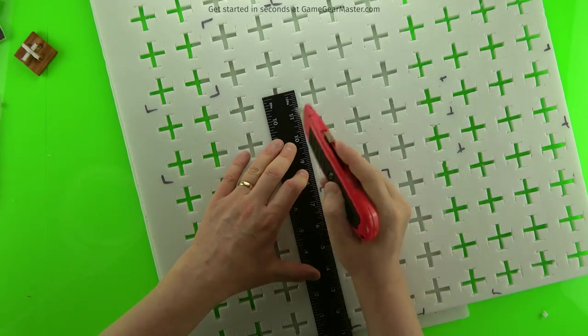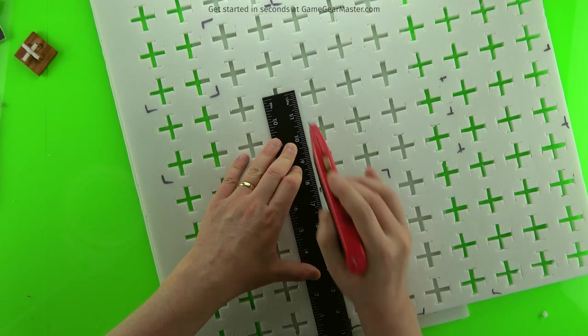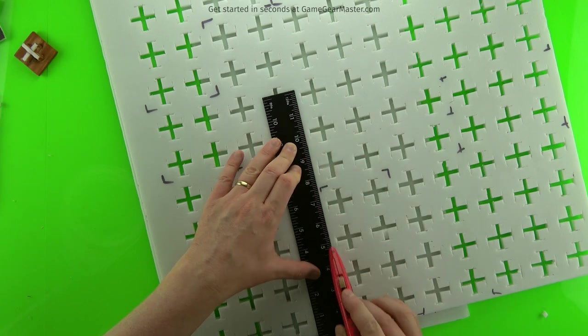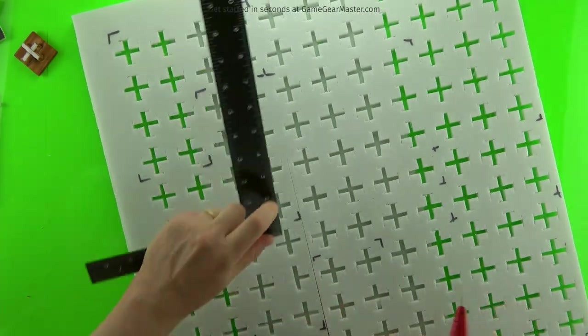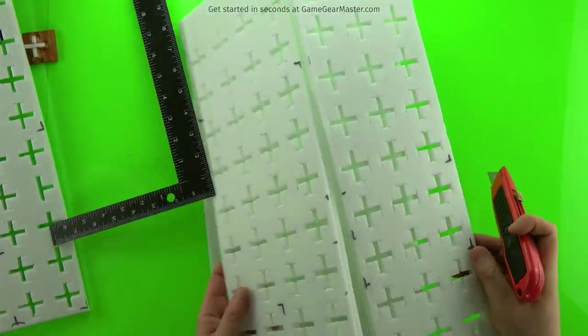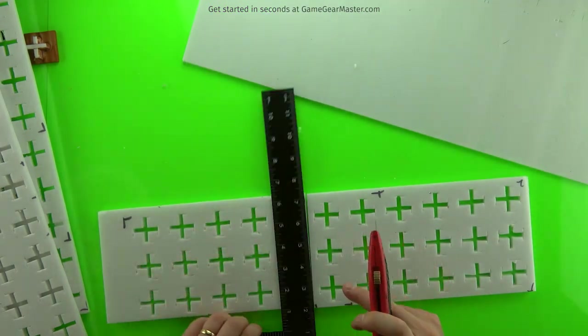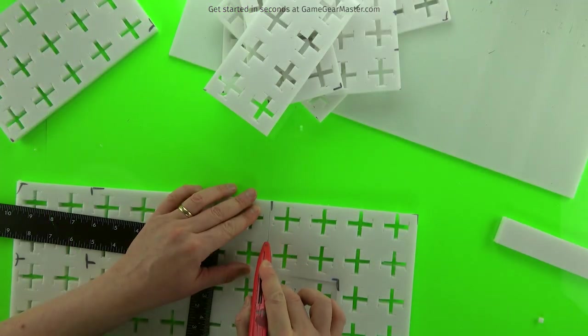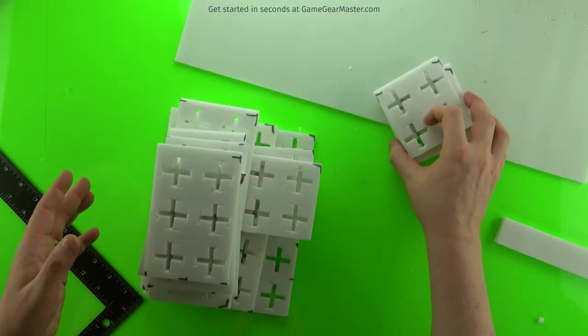You want to be in the middle between those sockets. Don't worry about these cuts being super accurate. What we're going to do later on is once they're painted and assembled, we're going to trim off the edges so they're perfect. There you go, you got a whole bunch of grid bases now.